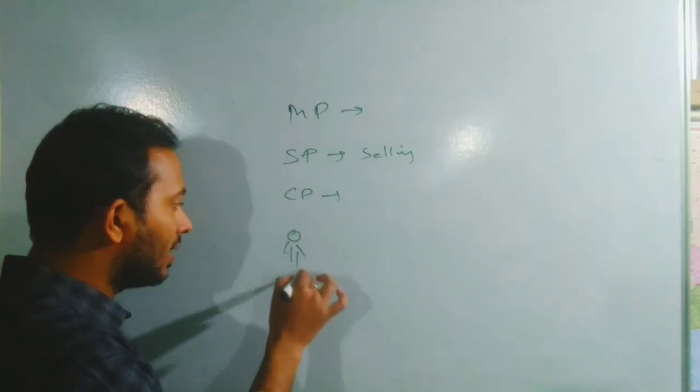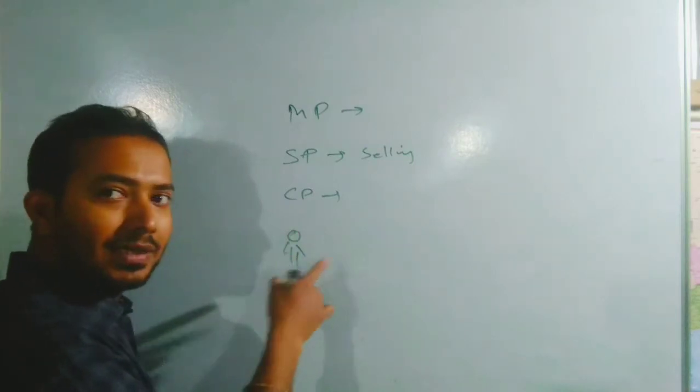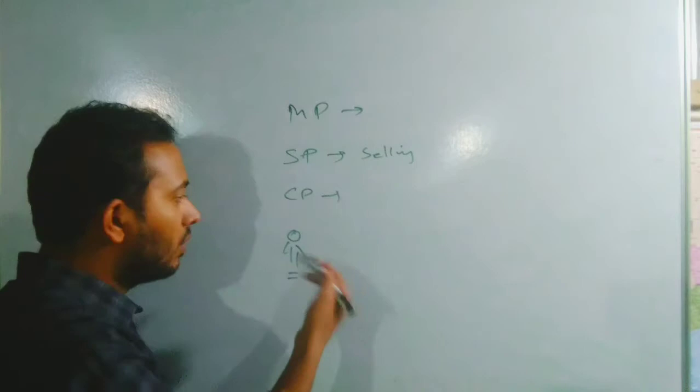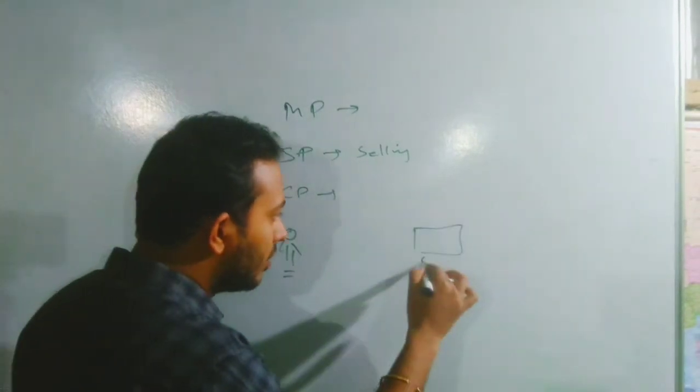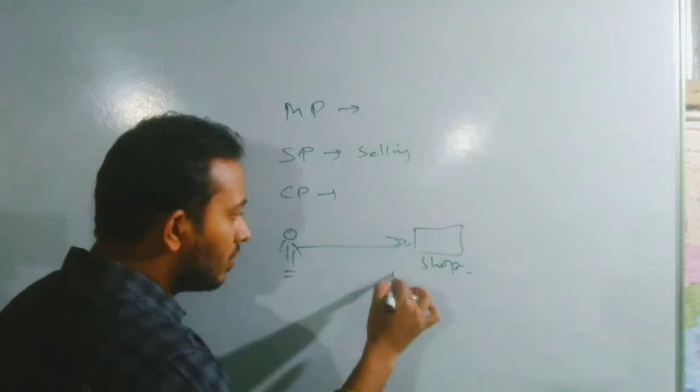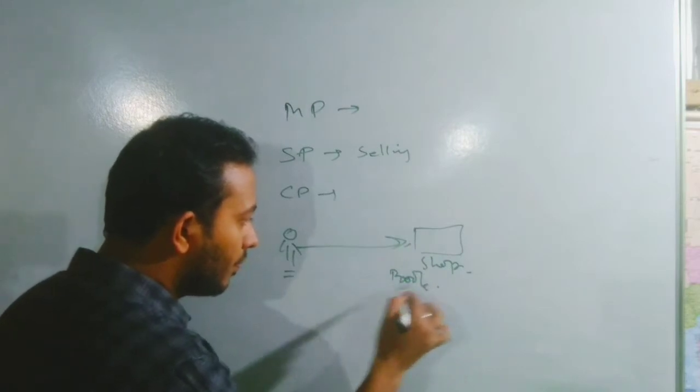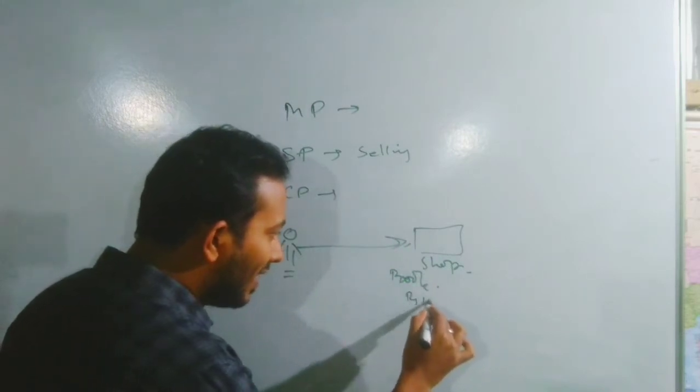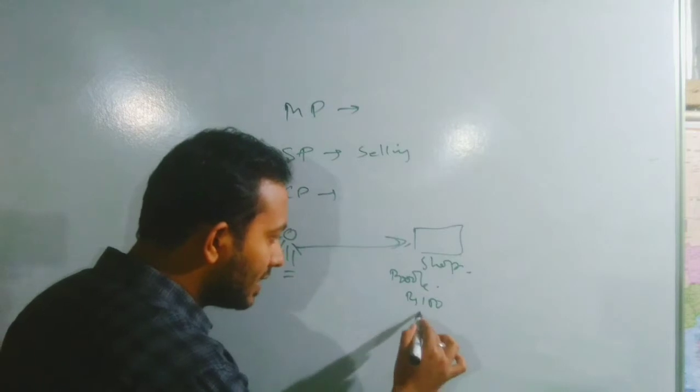Like if you take this is the particular person that is I or you and this is your shopkeeper. So if you purchase a book and it is written rupees 100 on the book. That is your mark price.